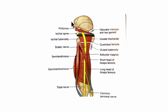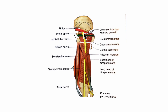Next let us look at the course and relations of the sciatic nerve. In the pelvis the nerve lies in front of the piriformis muscle under the cover of its fascia. In the gluteal region the sciatic nerve enters through the greater sciatic foramen below the piriformis muscle.